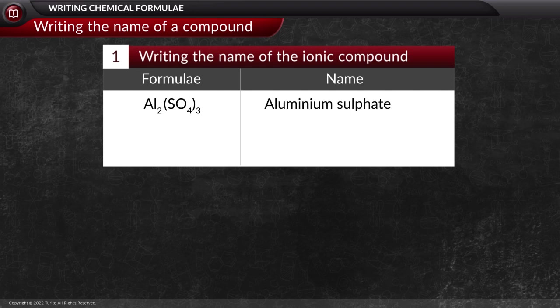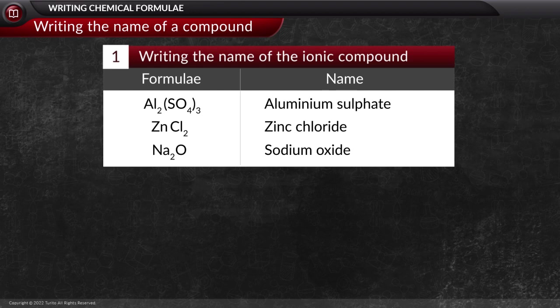Likewise, the next example is a compound that has zinc and chlorine. As you already know, for chlorine, we write chloride. Thus, the name will be zinc chloride. Similarly, we can write sodium oxide for Na2O.